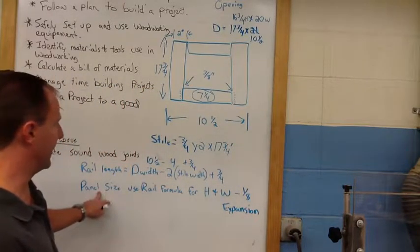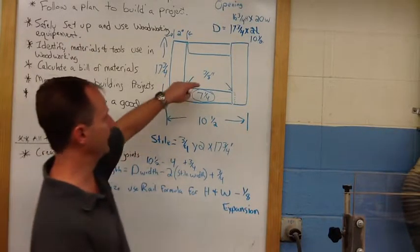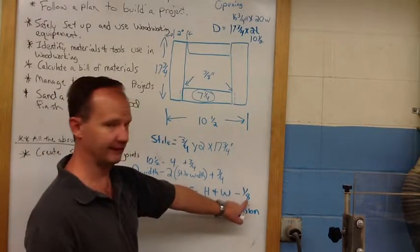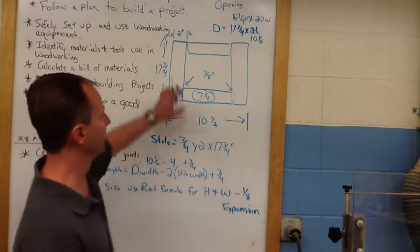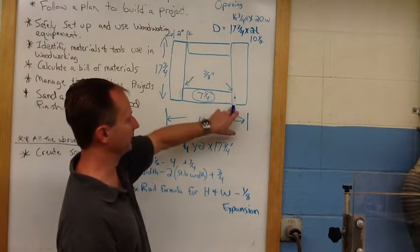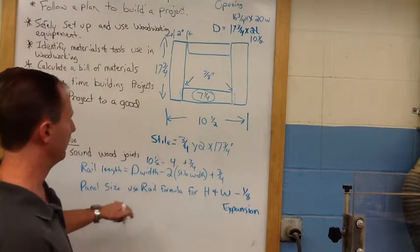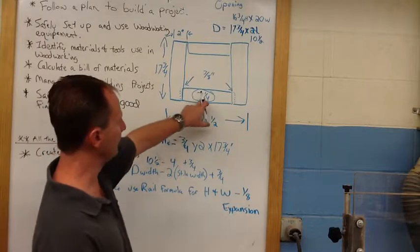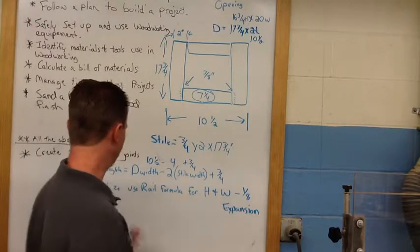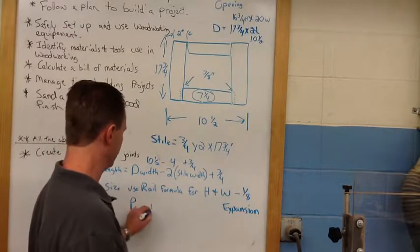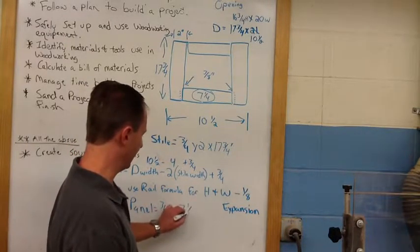Now, to calculate the panel size, we're going to use the same rail length formula for both the height and width. But at the end, we're going to take a 16th to an eighth inch to allow for expansion. So that the expansion of this panel does not break these joints apart, we need to allow for that. And that's what that 16th to an eighth inch is. So, when I simply do this, we've already got the rail width here. All I need to do is simply take off an eighth inch. That means my panel size is going to be 3 quarters by 7 and an eighth.